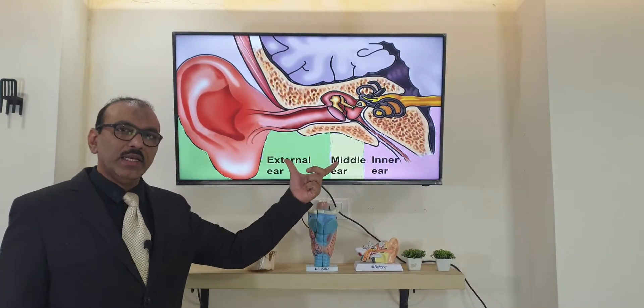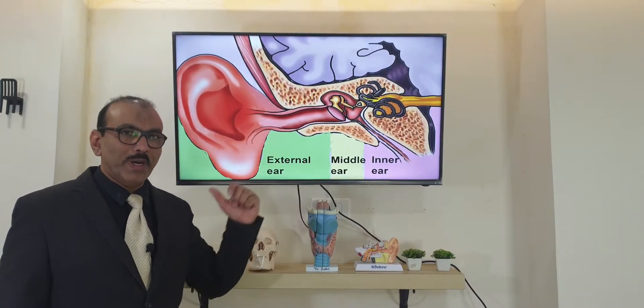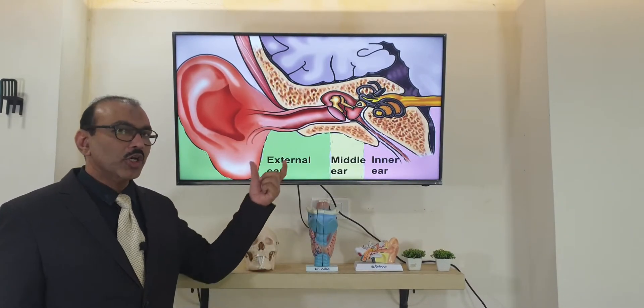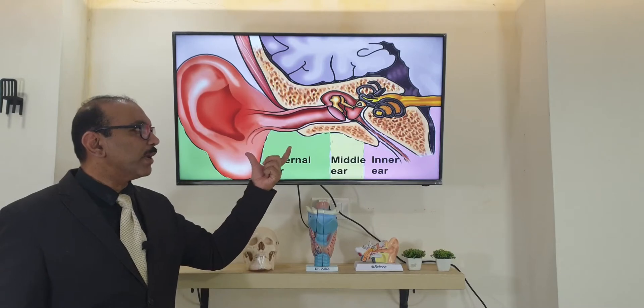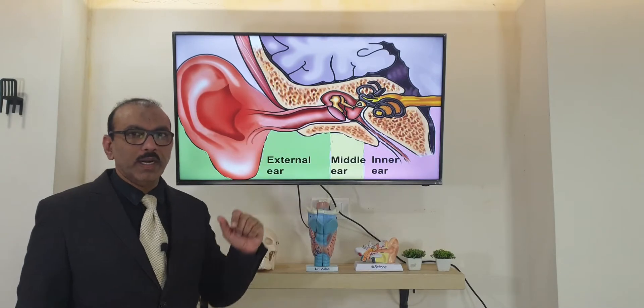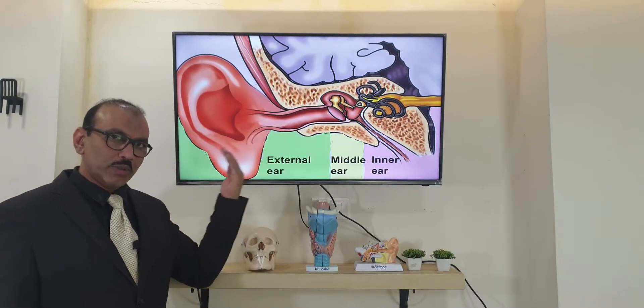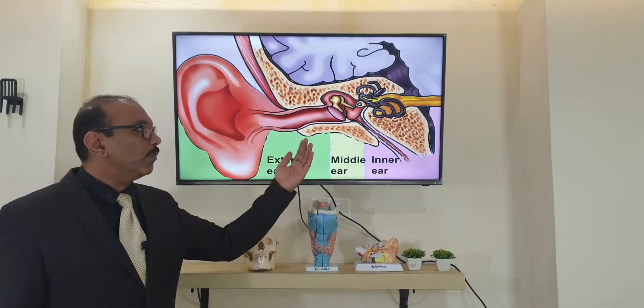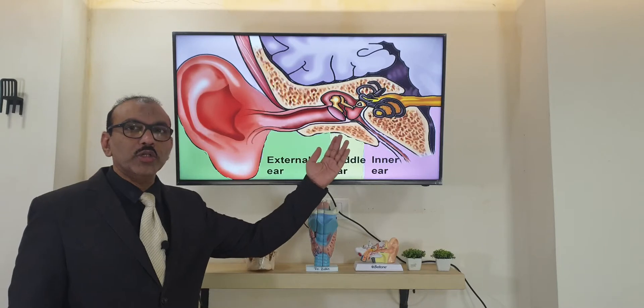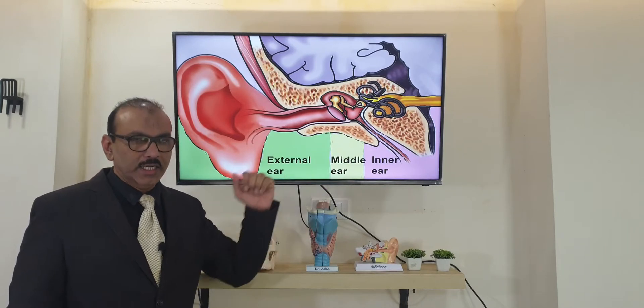The external ear has got two parts. It has got a cartilaginous part and a bony part. The cartilaginous part is outside, and the bony part is nearer to the eardrum.